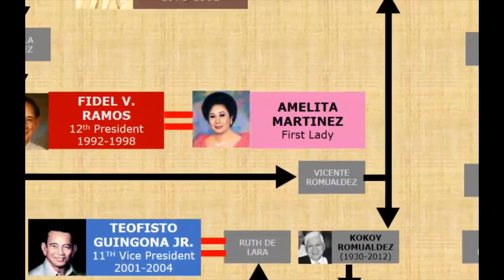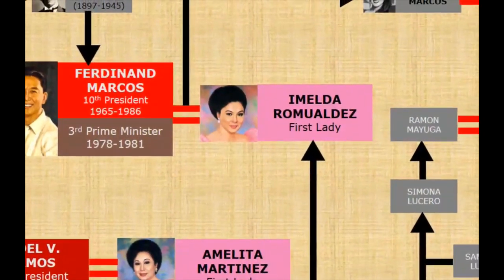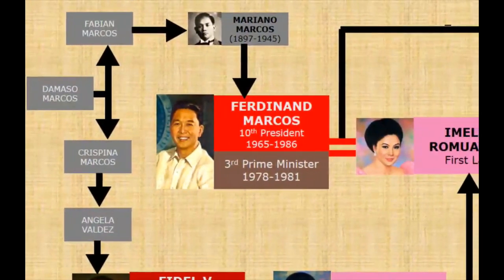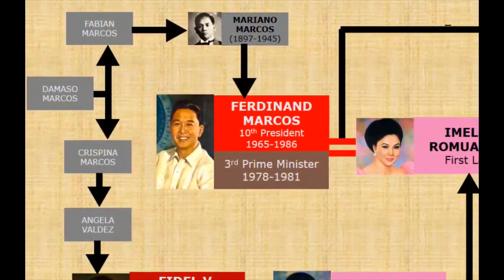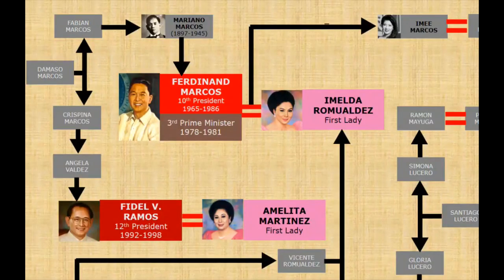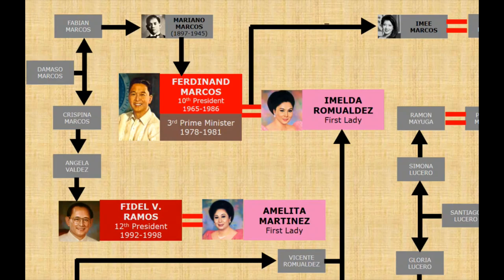Going back to the Romualdez family tree, we can also add another president. Through her husband Ferdinand, we can see that Ferdinand Marcos was a second cousin of President Fidel Valdez Ramos. Fidel Valdez Ramos, the 12th president of the Philippines, was a hand-picked successor of President Aquino and served from 1992 to 1998. He was the second cousin of Ferdinand Marcos because his grandmother Crispina Marcos was the sister of Fabienne Marcos, grandfather of Ferdinand Marcos.